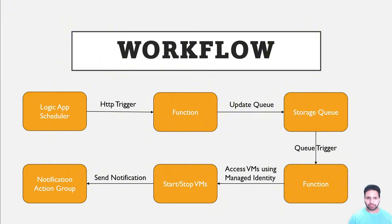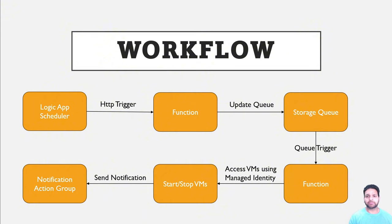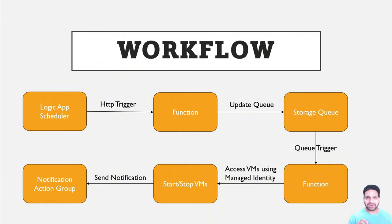In this solution, a single function app is created where there will be 12 different functions. Once the request is sent from the logic app, it acts as an HTTP trigger for the function app and the specific function is triggered. This function sends a request to the storage account where a queue is defined, updating the queue that the specific virtual machine needs to be stopped or started. Based on the queue trigger, another function picks up that message and stops or starts that virtual machine. For the function to stop and start the virtual machine, specific permissions — role-based access control — are needed, and managed identity is used for that. Finally, once the virtual machine is started or stopped, it sends a notification using the action group, which by default uses email notification.